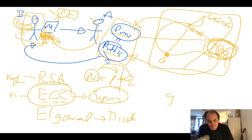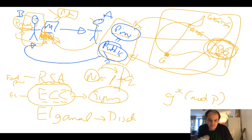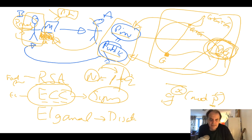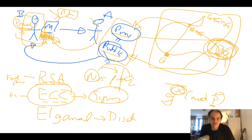ElGamal uses discrete logarithms. With discrete logarithms we have something like G to the power of X, and we typically define this in a finite field, taking the mod of a prime number. It's not possible, even though we know G and P, to determine the value of X if P is large enough and X is also large enough.